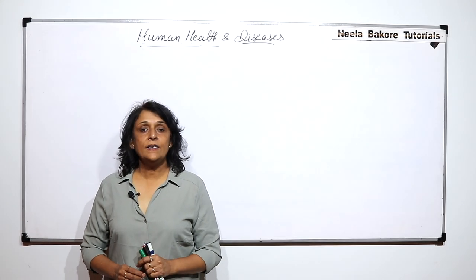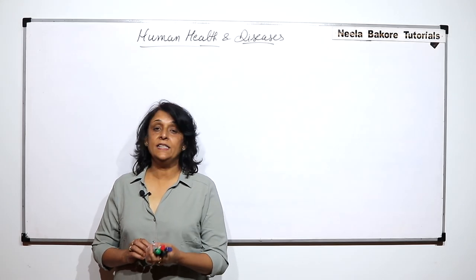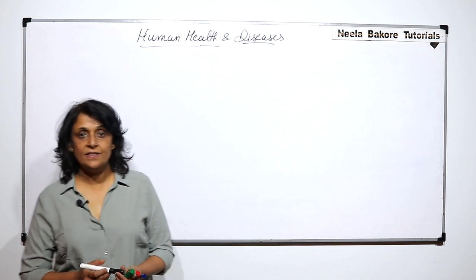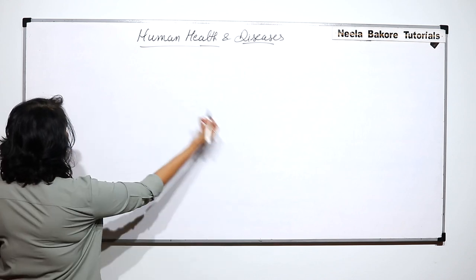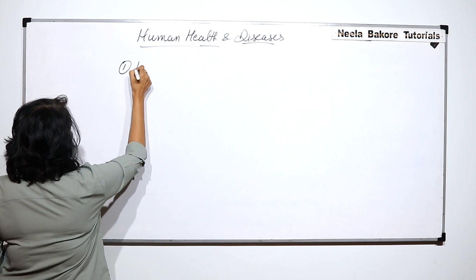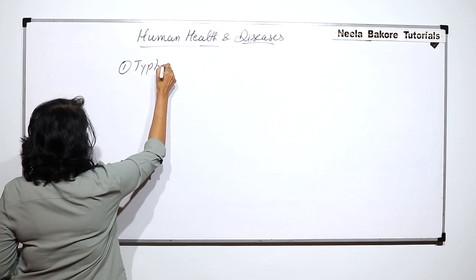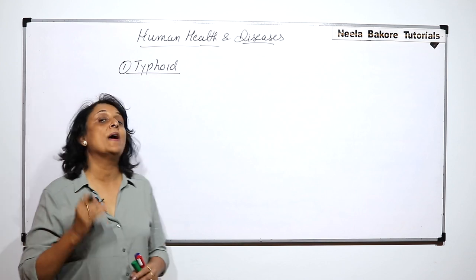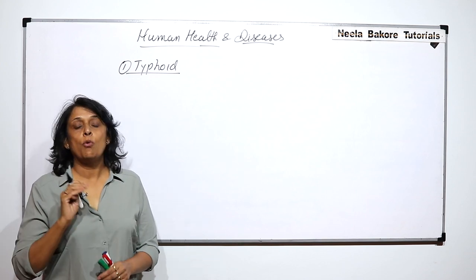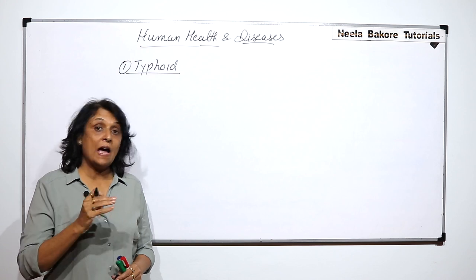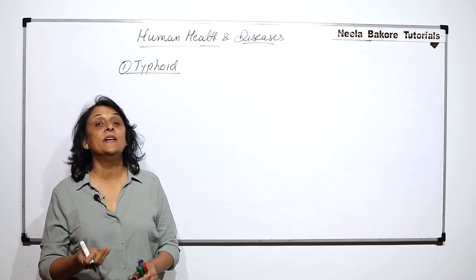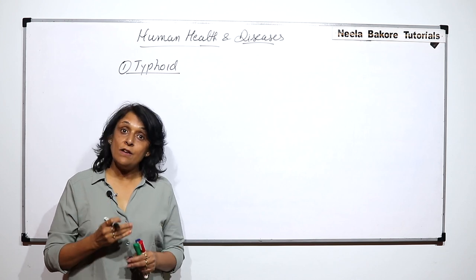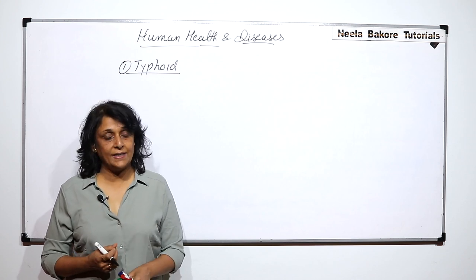We will now start discussing the diseases in detail, and we are starting with bacterial diseases. The first is typhoid, and we have to discuss every disease under a few heads: first, what is the causative agent, then how does it spread — the epidemiology — the symptoms, treatment, and if there is something special about that disease.